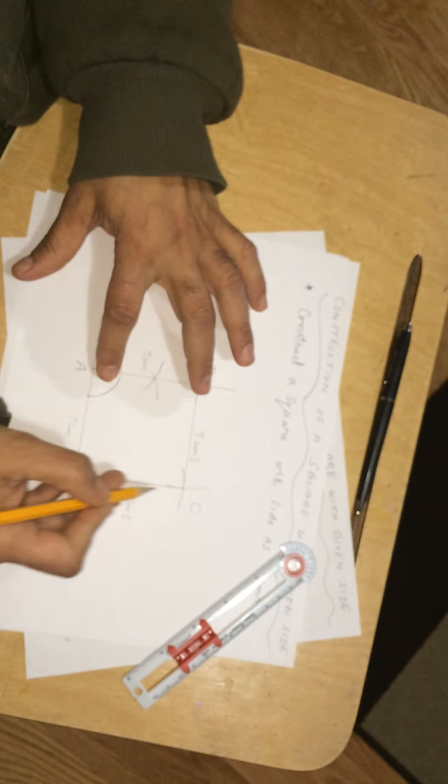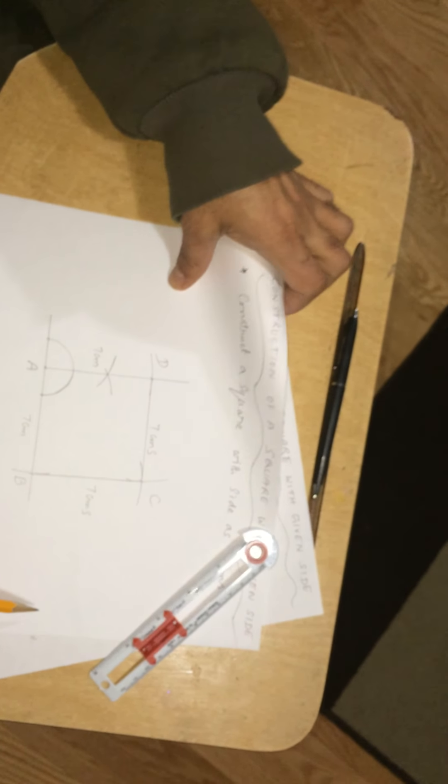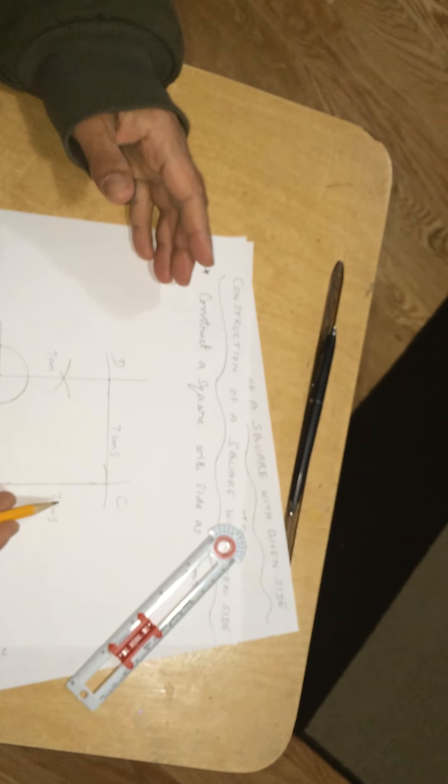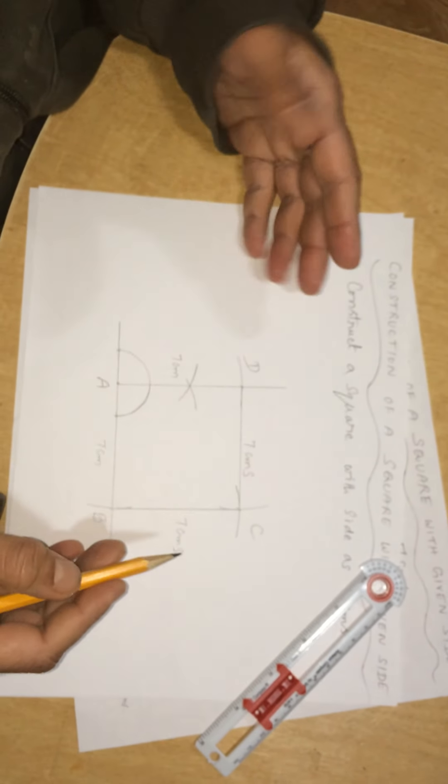That means, in a square, all four sides are equal. In this case, 7 centimeters. And all four angles are right angles. So, in this way, we construct the square. That's it. Thank you.